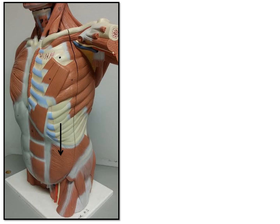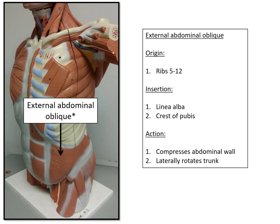Our next muscle is the external abdominal oblique. The origin for this muscle is ribs 5 through 12. The insertion is the linea alba or the crest of the pubis — you can just pick one for the quiz, whichever one you like, study that one and stick with it.